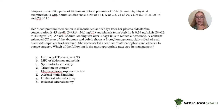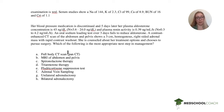A contrast-enhanced CT of the abdomen and pelvis shows a three-centimeter homogenous right-sided adrenal mass with rapid contrast washout. She's counseled about her treatment options and chooses to pursue surgery. Which of the following is the most appropriate next step in management? Options include: full body CT scan, MRI of the abdomen and pelvis, spironolactone therapy, triamterene therapy, fludrocortisone suppression test, adrenal vein sampling, unilateral adrenalectomy, or bilateral adrenalectomy.